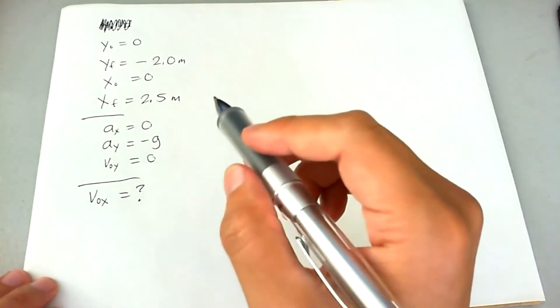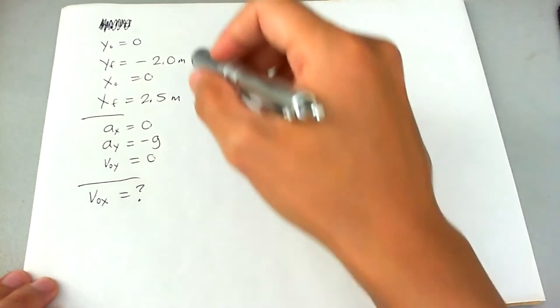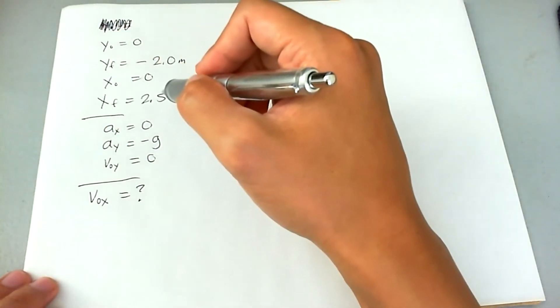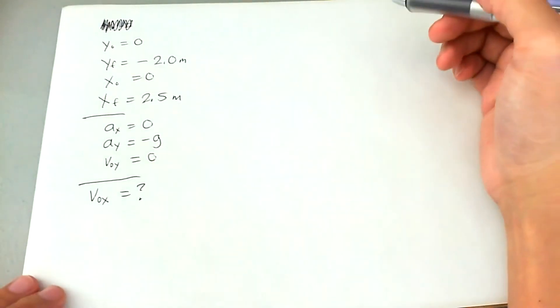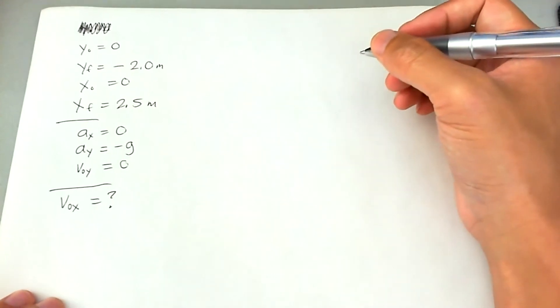So first I'm going to find which equation has this unknown parameter and all the known parameters in one equation. Hopefully we can get one equation, get this over with from just one formula. Unfortunately, I already know this problem. It's not going to happen.